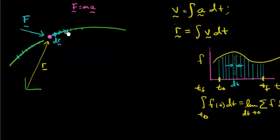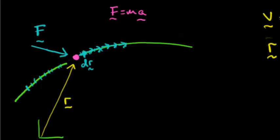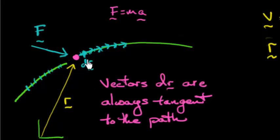Each one of these little chunks has a little arrow associated with them. These are little vector differences. So every little chunk along the way is a vector. And it's really important to note that these vectors dr along the path, they're always tangent to the path. This is going to be important for us.